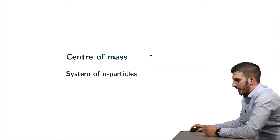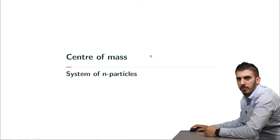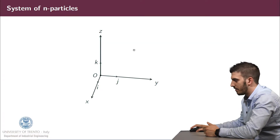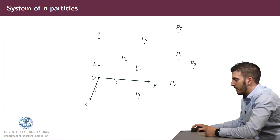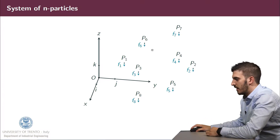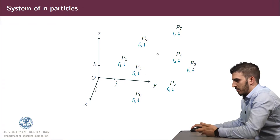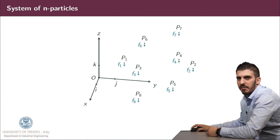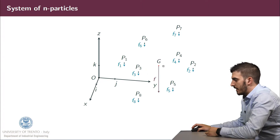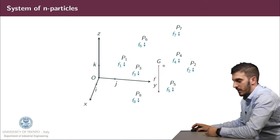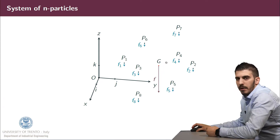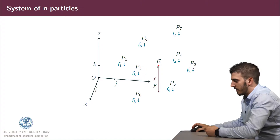We define the center of mass for a system of M particles. We define a reference frame system centered in O and eight particles in the space. On each particle is acting a force, a field force — that could be, for example, the gravitational field. We define the point G, which is the center of mass, as a point in which we can apply a force which is the resultant of all the forces on the single particles.